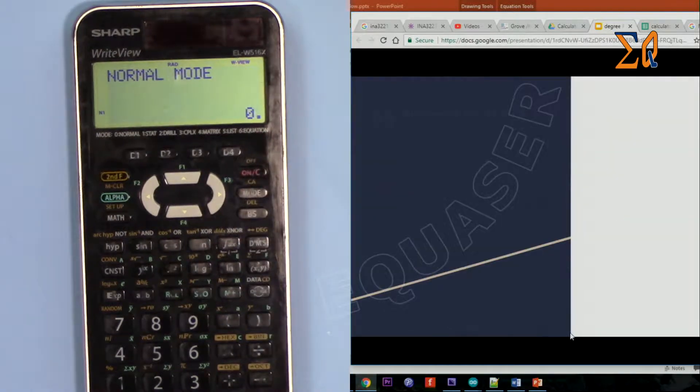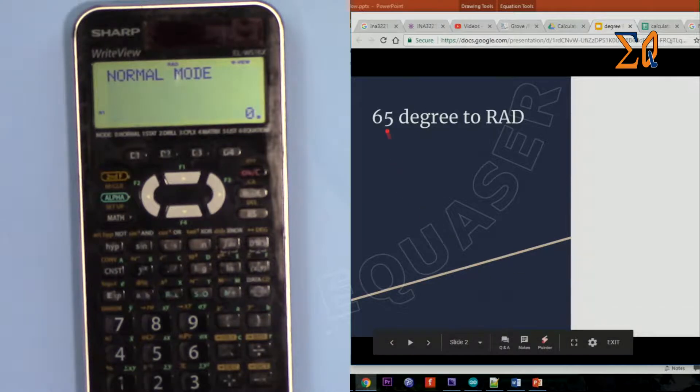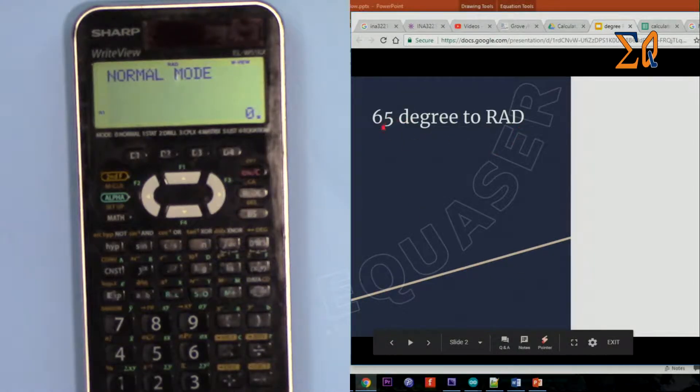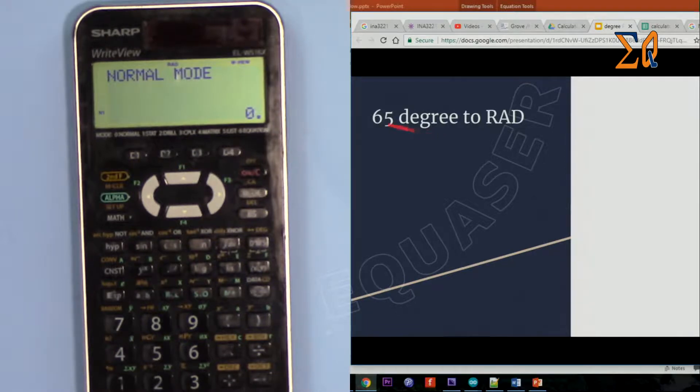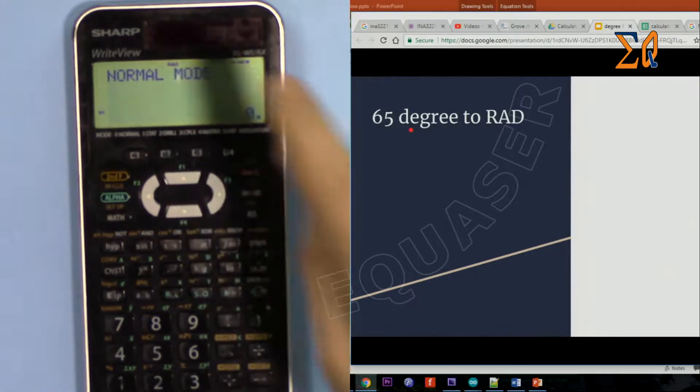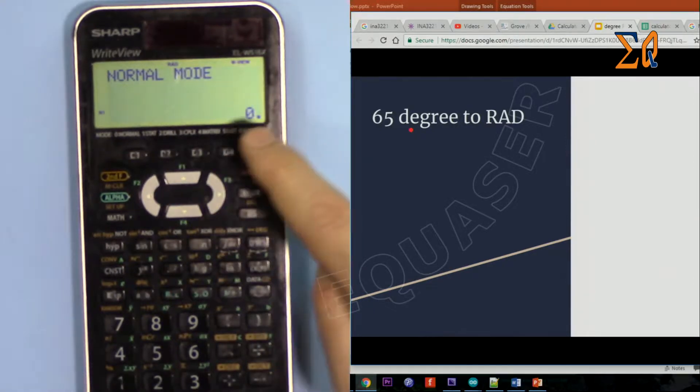So let's get started here. Let's say you want to convert 65 degrees to radian. To convert something from a value you must be in that value. Now here it shows RAD, so on the screen first let's see how you can change that into different value.